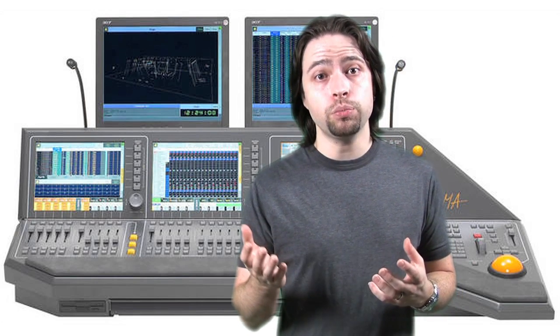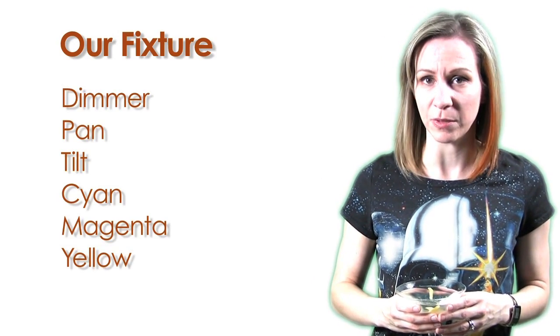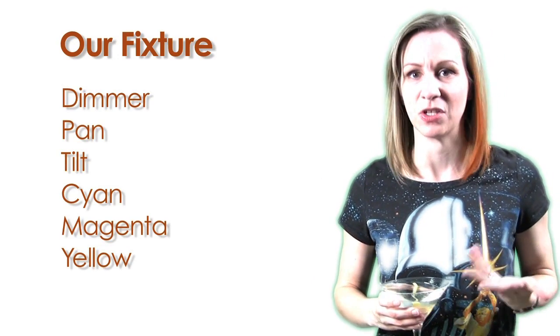The Grand MA makes a distinction between the number of fixture parameters used in the show and the number of DMX channels required to output all the data, and this area might be a little blurry for some people. Moving lights have multiple attributes that require multiple channels, or slots, of control. Let's say that we have a fixture that has dimmer, pan, tilt, and color mixing — cyan, magenta, and yellow.